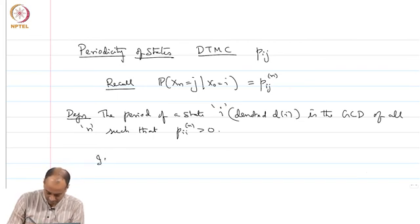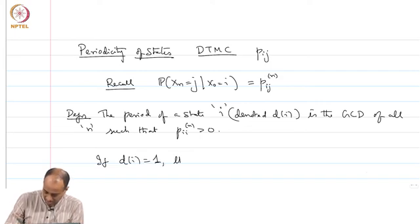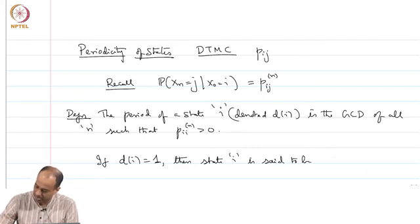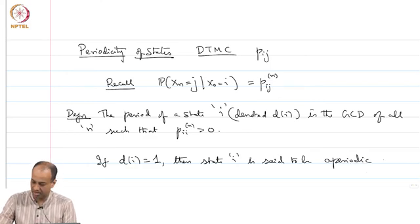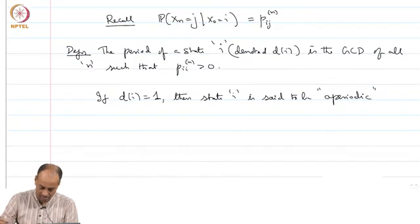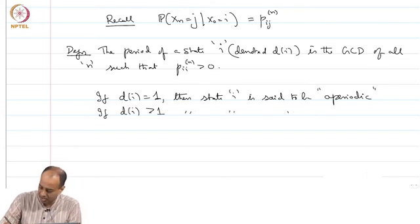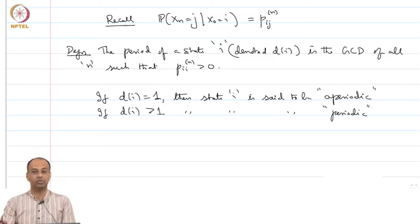If D(i) is equal to 1, then state i is said to be aperiodic. If D(i) is greater than 1, then state i is said to be periodic with whatever period D(i).